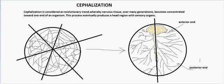Many people think cephalization includes the development of a distinct head structure. To make it clear: cephalization is not at all related to the development of a head. It is only concerned with the concentration of nervous tissue towards one side.